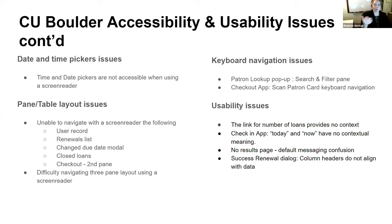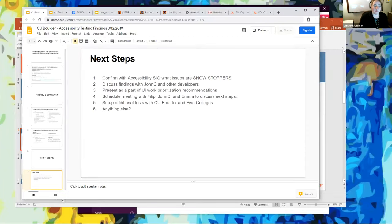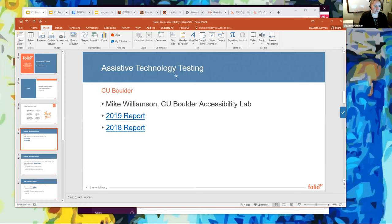These are the types of reports we get, and one of the reasons I wanted to show this was so you can understand that we are doing testing in a lot of different areas with users who use assistive technology, and we're getting those things into the backlog. In terms of next steps, the Accessibility SIG addresses the showstoppers, discusses findings with developers, and meets with Philip to improve the user experience. We continue this relationship, and I believe there's more testing planned — in fact, we have a call this afternoon to talk with Mike about keyboard navigation.